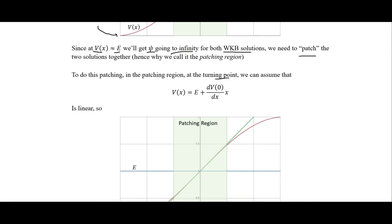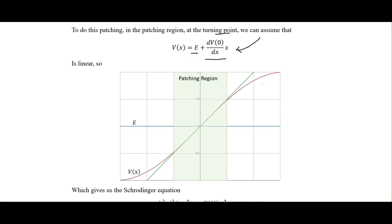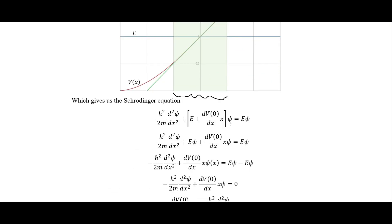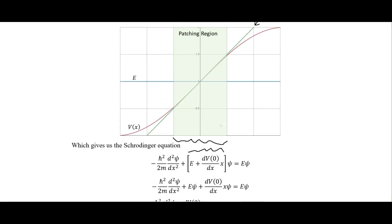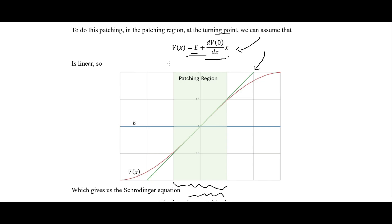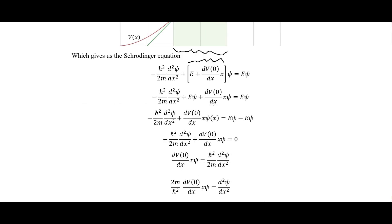To do this, in the patching region at the turning point we assume the potential can be written as the energy plus the change in potential with respect to x, and we assume this is linear. The green line shows that in the patching region this is roughly linear. We then write the Schrödinger equation with this linearized potential.